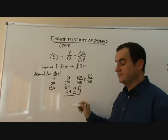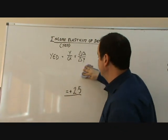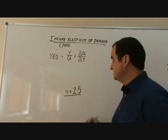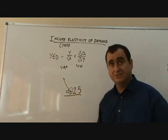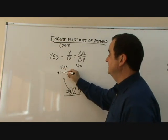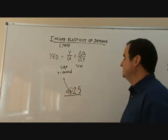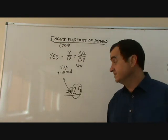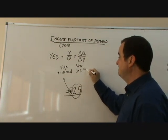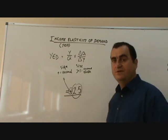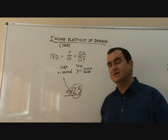There are two pieces of information we must analyse when we get a YED reading: the sign and the size. The sign is positive, and that tells us it's a normal good — demand changes in the same direction as income. Income has risen, so has demand for steak. The size tells us how responsive the demand was — that's elastic, greater than one, so it's income elastic. For every 1% change in income, there's a 2.5% rise in demand for this good.